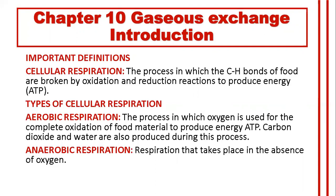There are two types of cell respiration: aerobic respiration and anaerobic respiration. In aerobic respiration, complete oxidation of food material takes place. Those carbon-hydrogen bonds undergo complete oxidation, and as a result, energy is produced along with carbon dioxide and water.